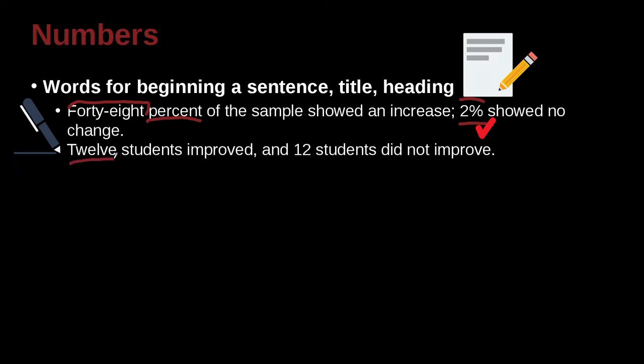Here's another example. 12 students improved and 12 students did not improve. Here, the word 12 is bigger than 10. So maybe we should write the number 12. But no, because it's the beginning of a sentence we do not do that. We have to spell it out.